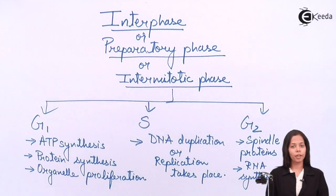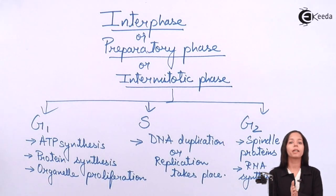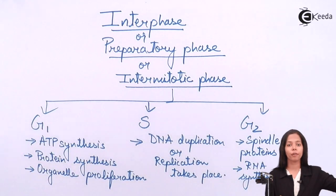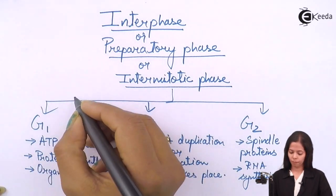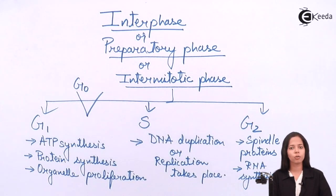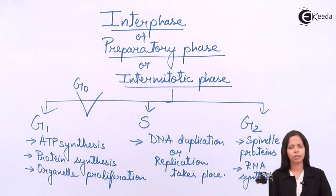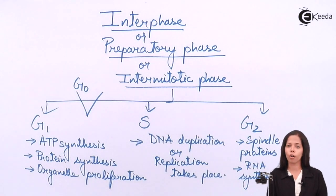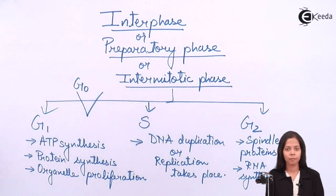Sometimes, after completing G1, instead of going into S phase, the cell enters a totally different phase called G0 phase, also called the quiescent or dormant phase. The cell enters G0 phase when it does not have favorable conditions to continue the process. In G0 phase, the cell stops its activity temporarily, not permanently.